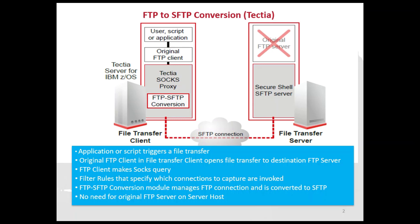Connections can be captured based on the destination address and/or port. The FTP to SFTP conversion module can extract the username, password, and destination hostname from the FTP application and use them for authentication and connection setup with a SecureShell SFTP server. The conversion module manages the FTP connection so it remains unchanged from the original FTP client's point of view, and the FTP is converted to secure SFTP file transfer.